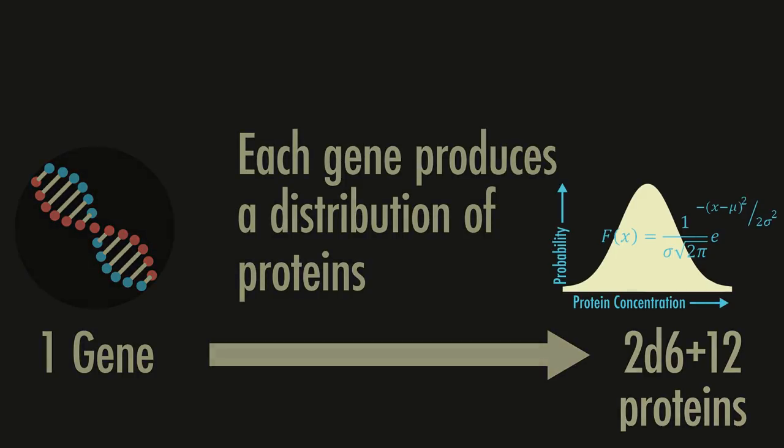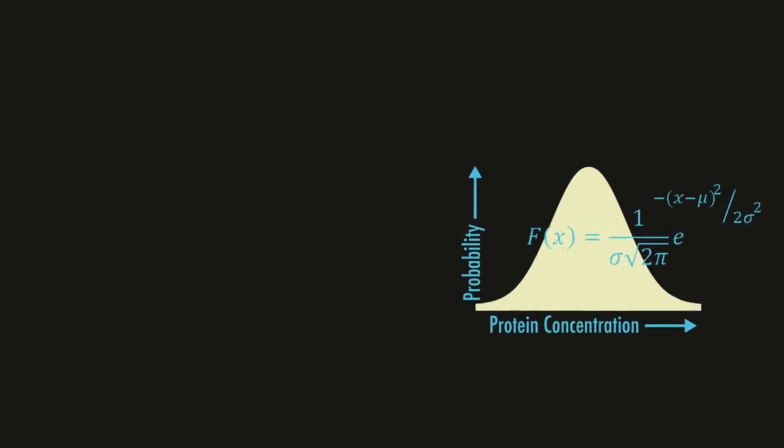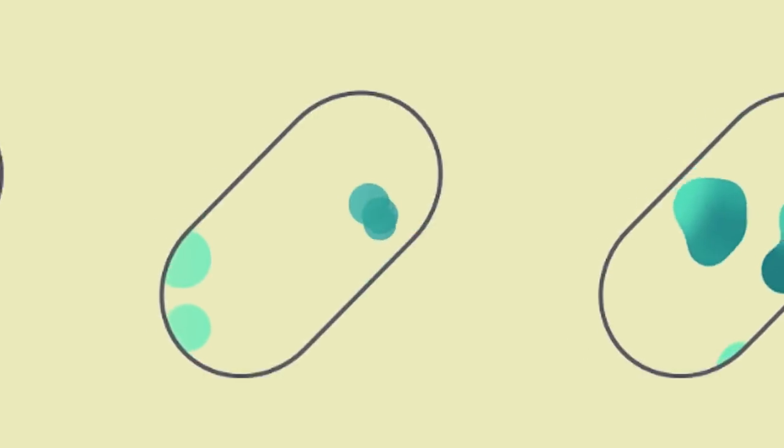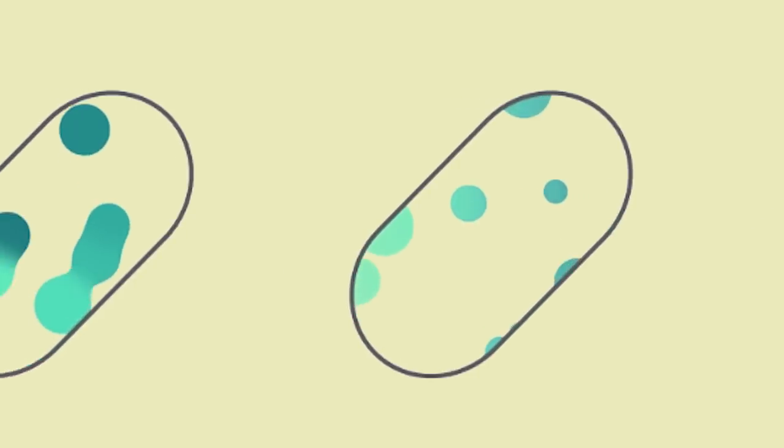That means, if you take a population of bacteria that grew by cell division and share exactly the same DNA, the individual cells all have different concentrations for a particular protein. Okay, that's the theory behind stochastic gene expression, but we can actually show this experimentally.